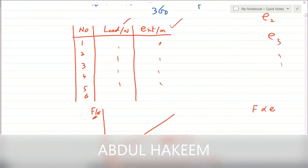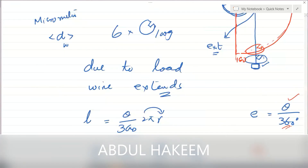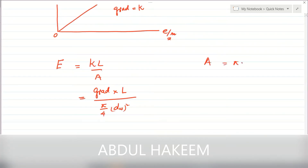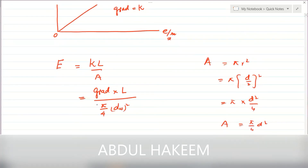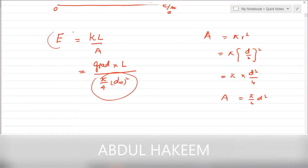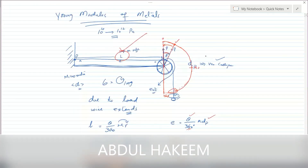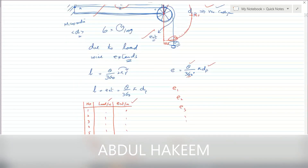By using the equation Young's modulus E equals k times L over A, where k is the gradient, L is the length of the wire measured with the meter rule, and A is the cross-sectional area of the wire. The area equals pi r squared, which can be written as pi over 4 times diameter squared. So the area is pi by four times diameter squared. In this way, Young's modulus is determined. The measurements in this experiment are: length of wire, diameter of pulley, diameter of wire, load, and angle measured by the protractor.